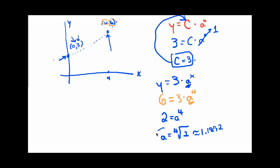So I found my C up above and I found my a, and this means I can fully specify, fully flesh out this exponential function. Here it is. It will be y equals 3 times 1.1892 to the x power.